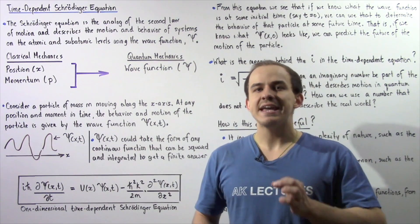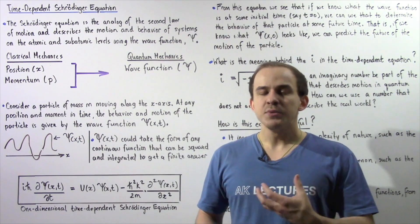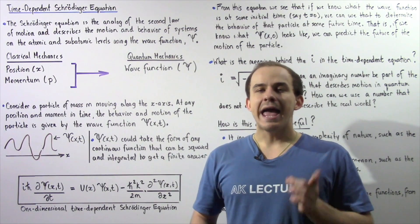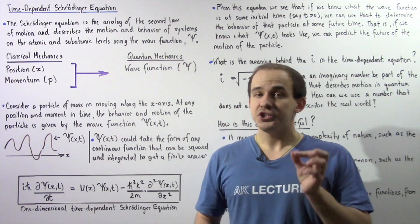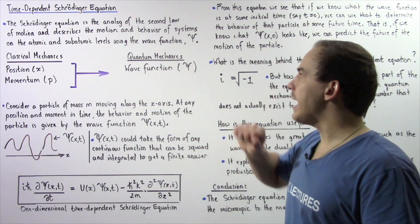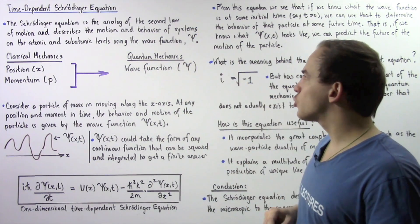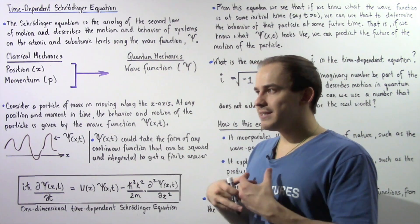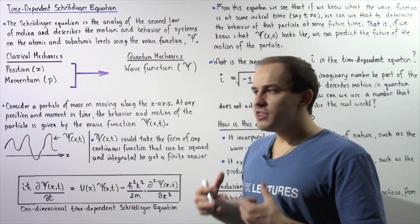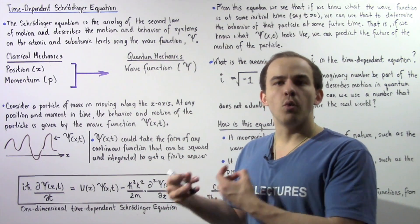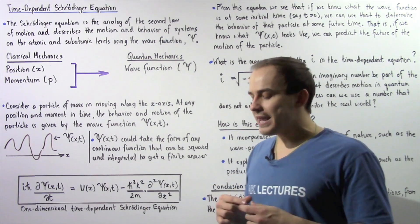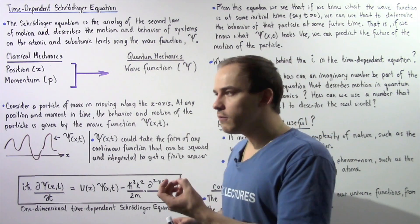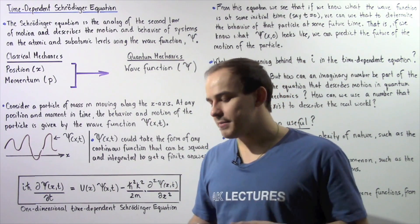the Schrödinger equation takes the role of helping us describe the motion and behavior of our system on the atomic and subatomic level, and it uses something known as the wave function given by the Greek symbol psi. So basically the Schrödinger equation is a differential equation that expresses itself in terms of the wave function, as we'll see in just a moment. But first, let's actually try to understand the role that the wave function takes in quantum mechanics.